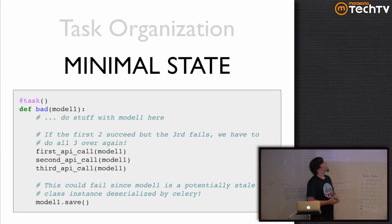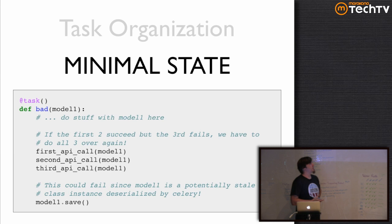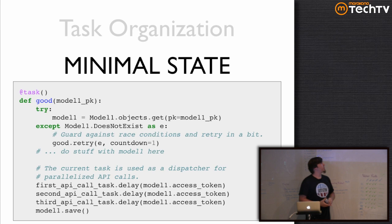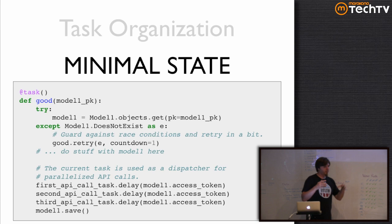Here's a bad example task: it passes in a model instance — as I said, don't do that. It makes several API calls in series in the same task, and when it tries to save the model instance at the end of the task you could blow up, because you are now working with a deserialized instance of a model whose state is completely undefined in relation to the database. Instead, if you pass in the model PK, you can avoid race conditions by retrying if you get a DoesNotExist exception — this helps you maintain reality with your database. Then you can use your task as a dispatcher for several API calls and get them all done in parallel.